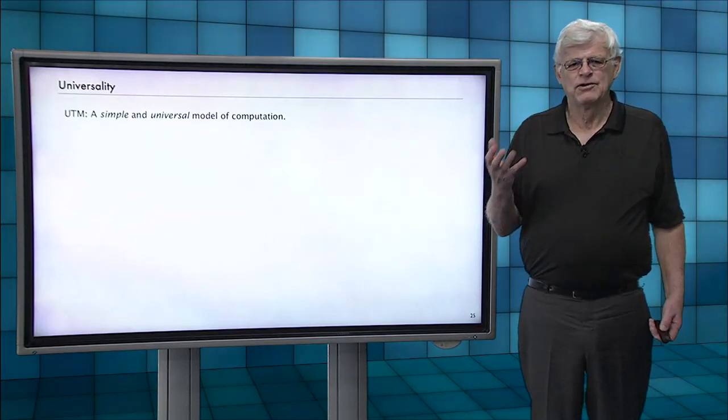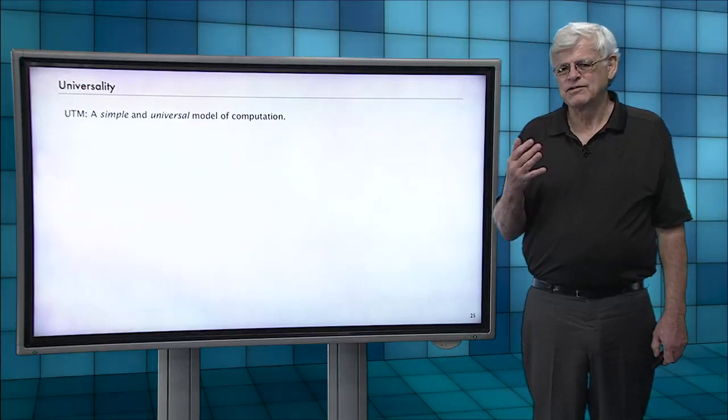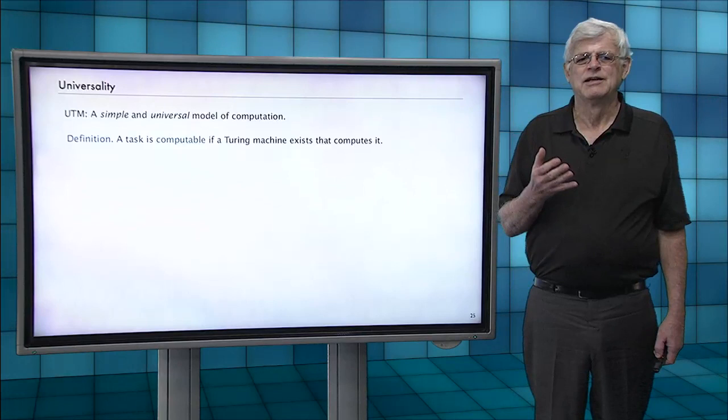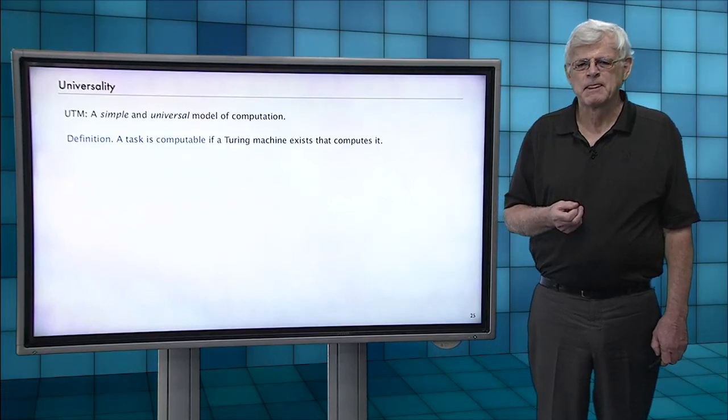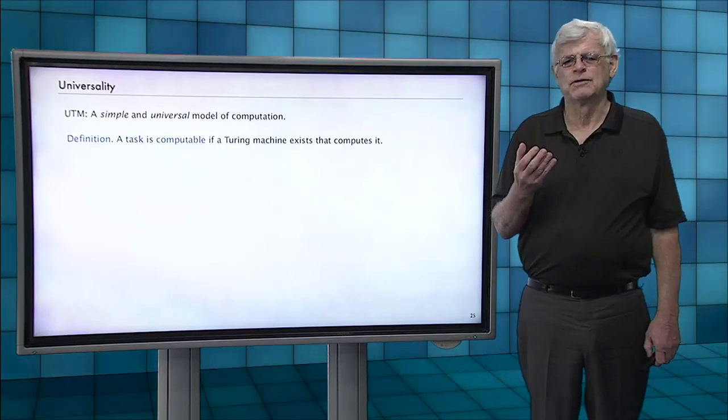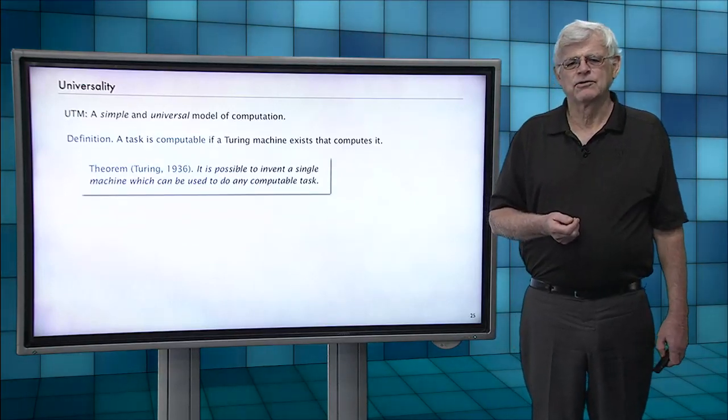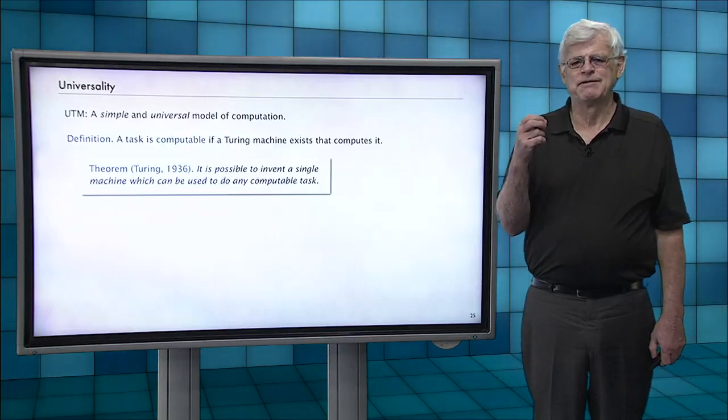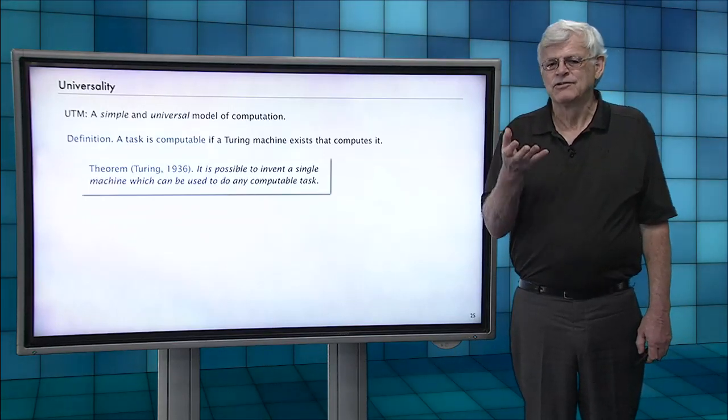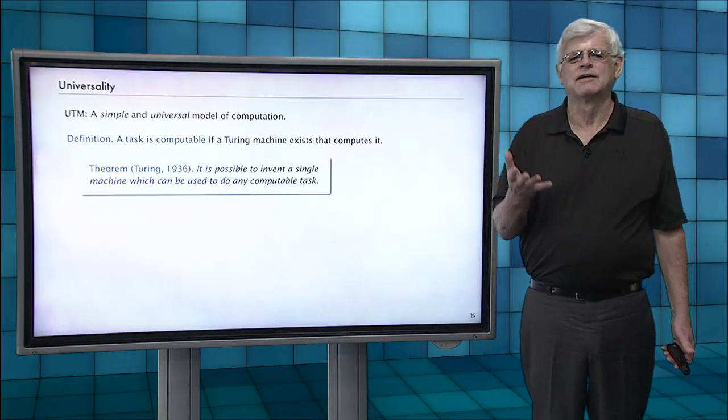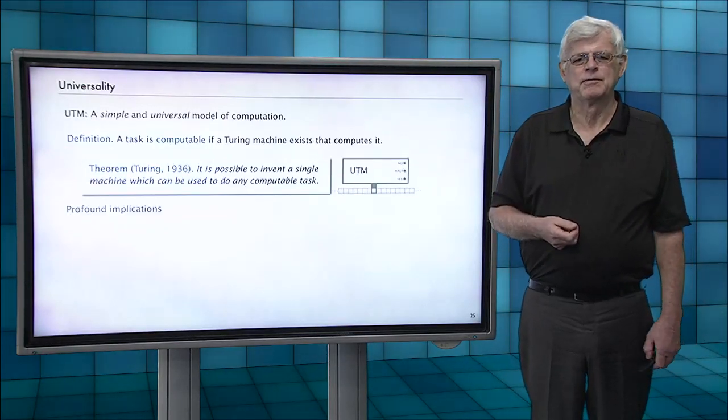But the idea of universality is really profound. A universal Turing machine is a very simple model of computation that's universal actually in a precise technical sense. We're going to call a task computable if a Turing machine exists that can compute it. And what Turing proved is that it's possible to invent a single machine that can be used to do any computable task. That's Turing's main theorem. One of his main theorems.